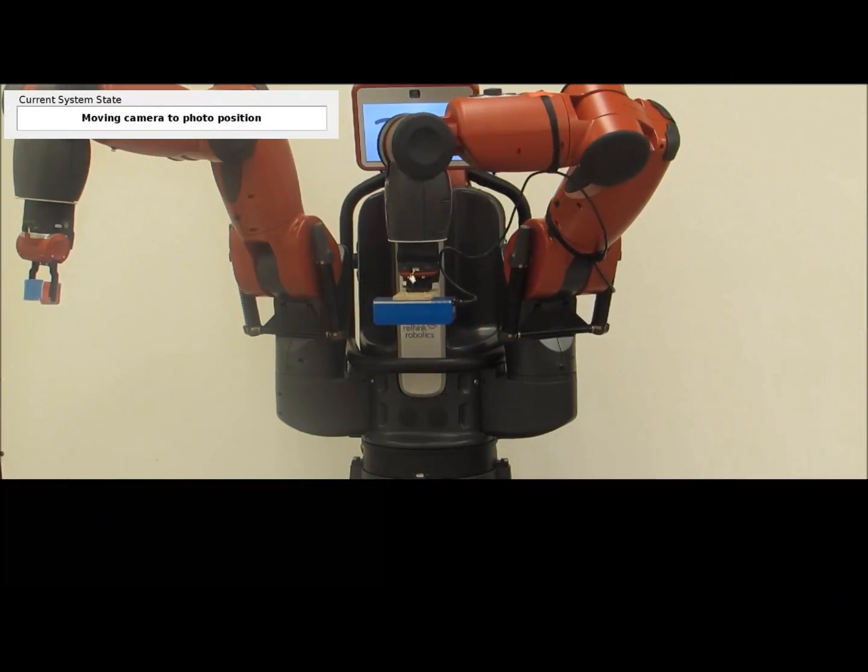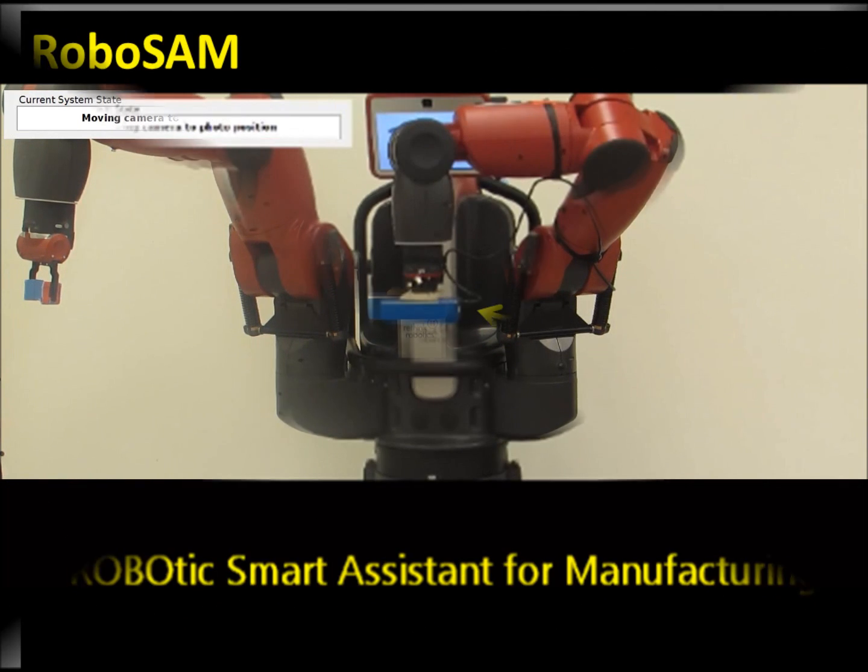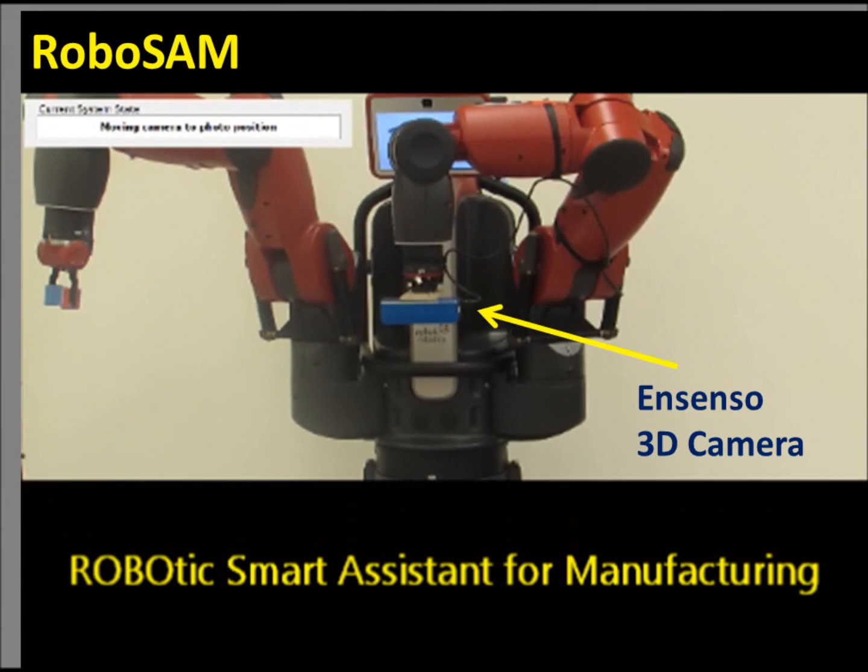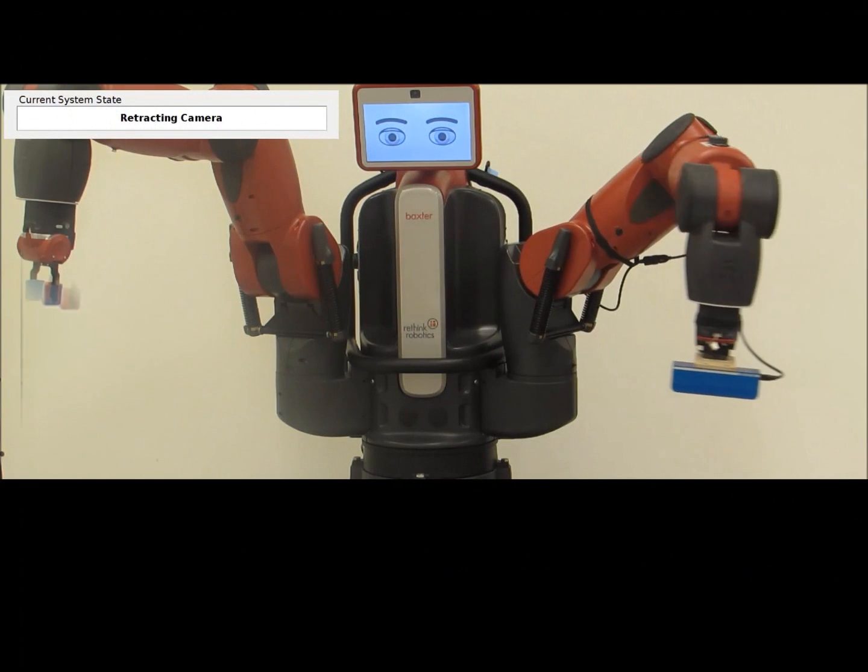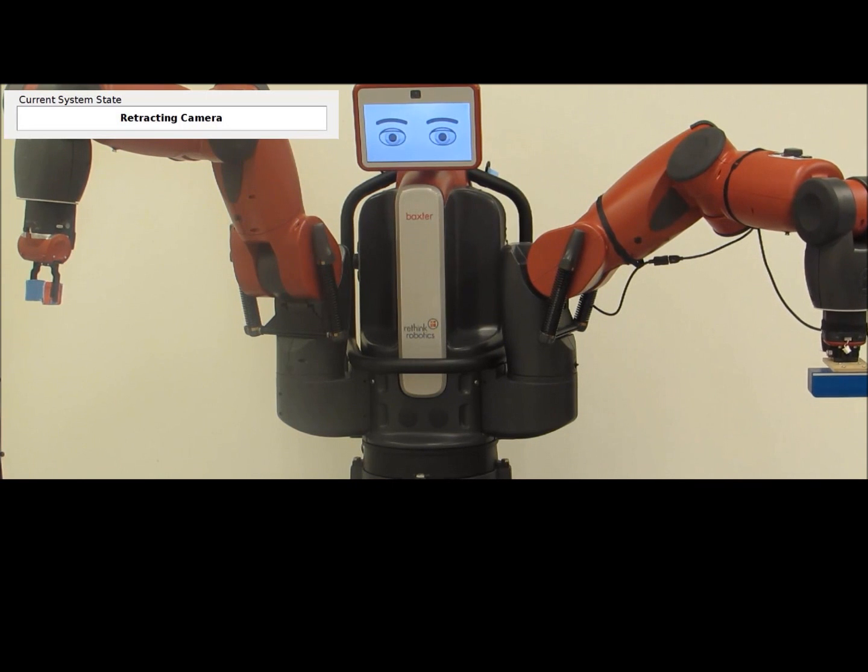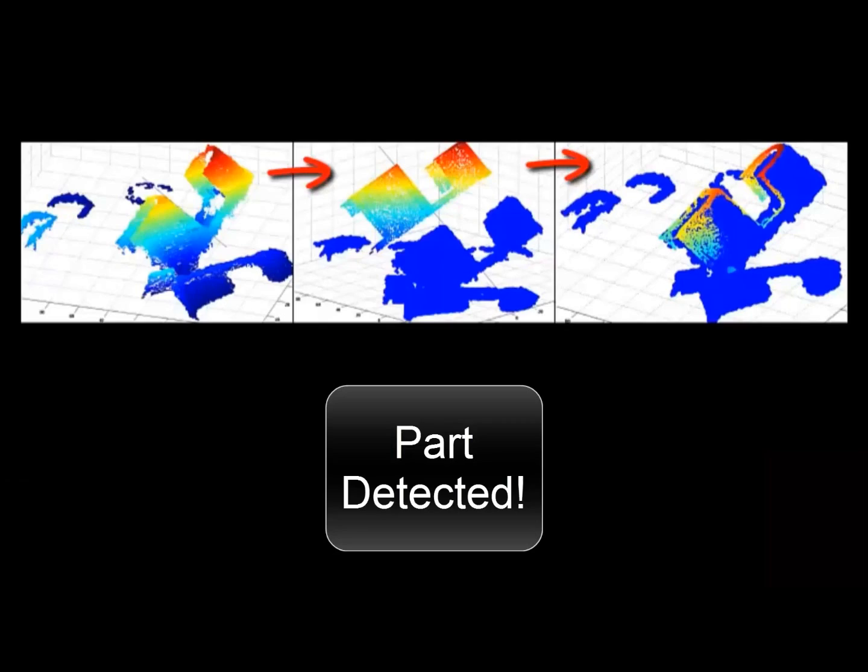We have developed a system called RoboSAM. RoboSAM uses a 3D camera mounted on the robot arm to take the picture of the bin, and then uses both the 2D image and the 3D point cloud to find the desired part in the bin.